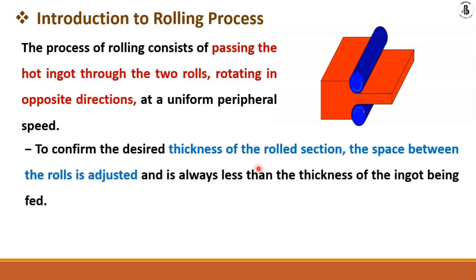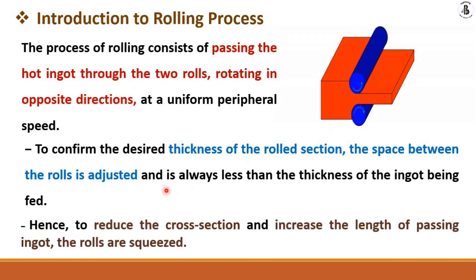In rolling, the desired thickness of the roll sections is achieved by adjusting the space between the rollers according to the requirement of thickness as well as cross-sectional area. The cross-sectional area is reduced and the length is increased as the ingots pass through — the rollers squeeze the material.